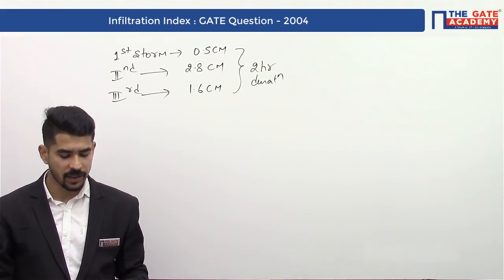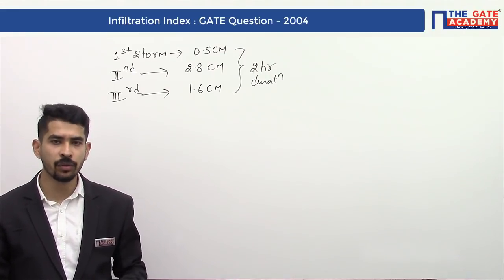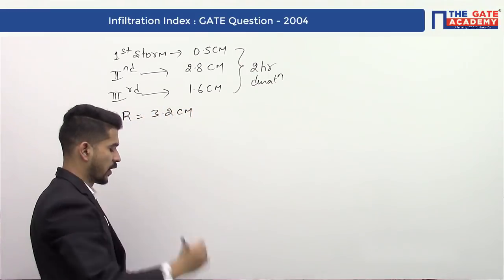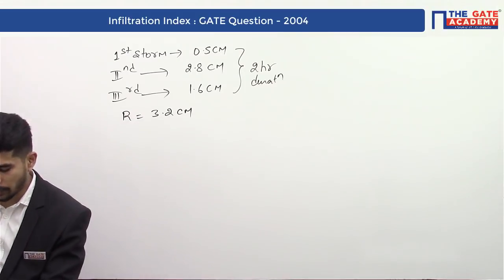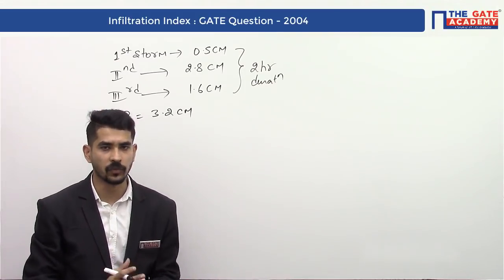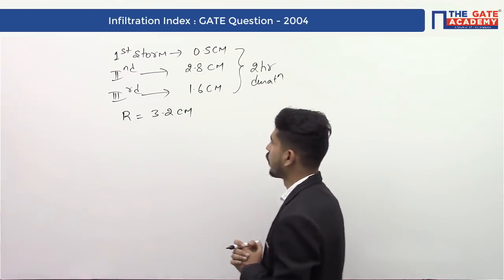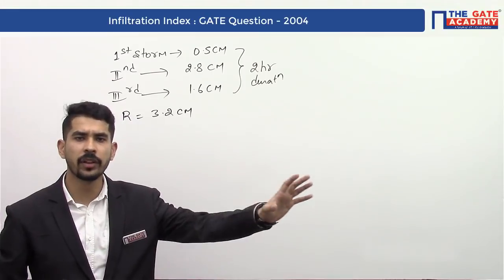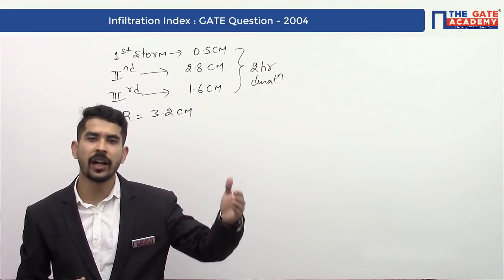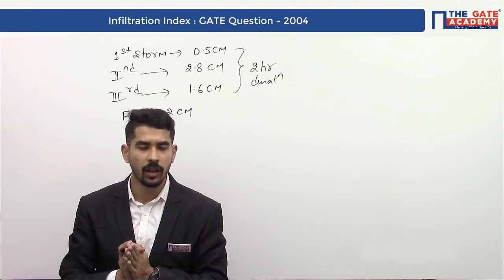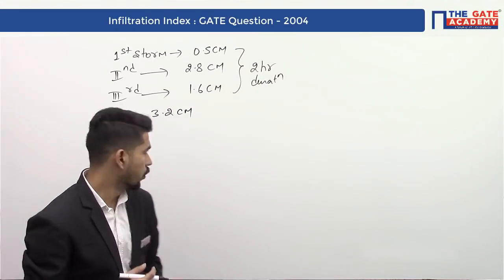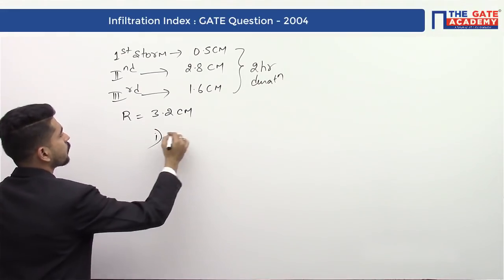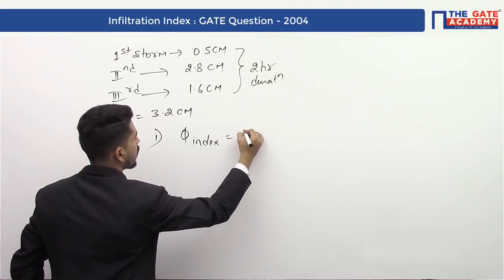The runoff produced from this storm is given as 3.2 centimeters, and we need to find the phi index. When calculating the phi index, we always do it in two steps: first we calculate a rough value of phi index, and then according to the given conditions we modify the phi index.